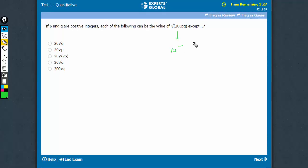This simplifies to 10 root 2pq and this is possible when q goes and 2 comes out. This is possible when p is equal to 2.